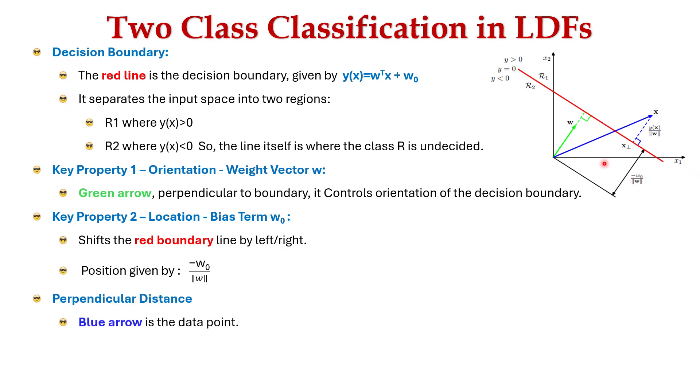The blue arrow represents the data point x. The perpendicular projection of point x onto the red line gives the distance y(x)/||w||. Hope you are clear on decision boundary with this example diagram.